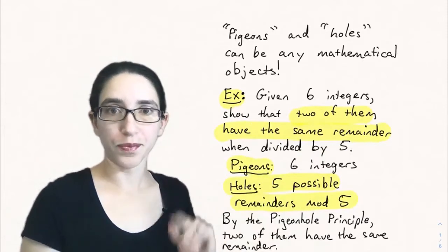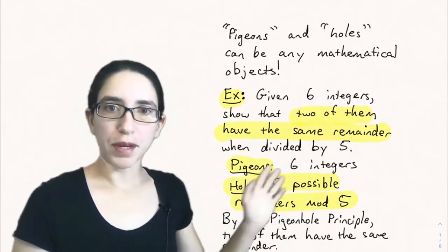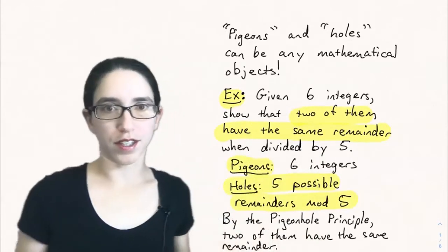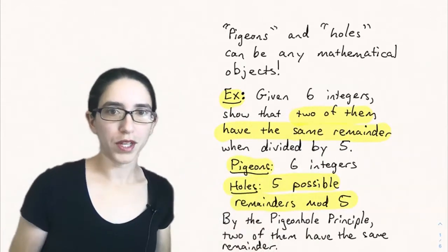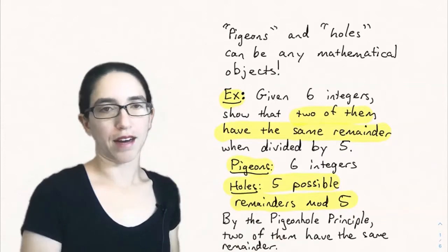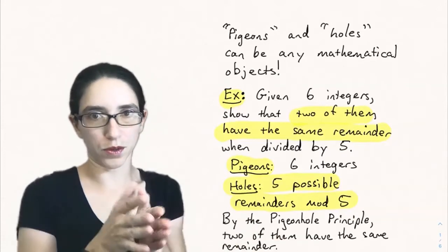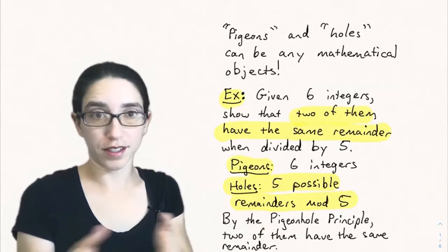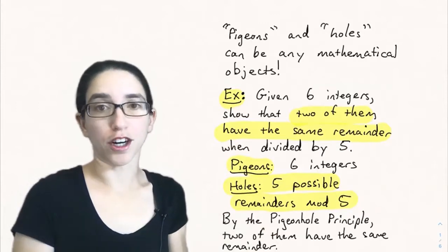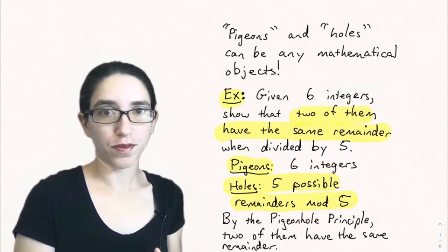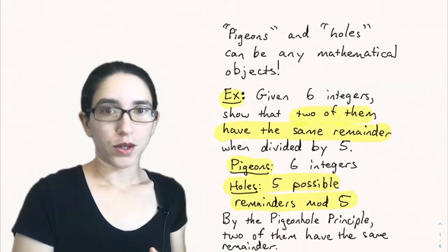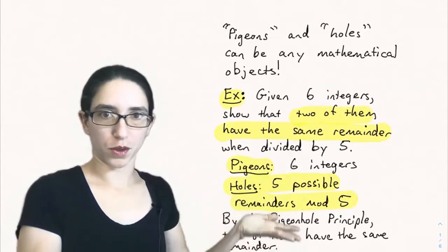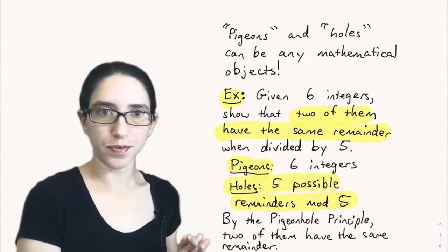The five remainders are zero, one, two, three, or four, and the pigeons are going to be the six integers. We have more pigeons than holes, and by the pigeonhole principle two of them have to have the same remainder. Two of those integers must be in the same remainder class — the same congruence class mod five. That's one example of the pigeonhole principle where the pigeons and holes were integers and remainders.